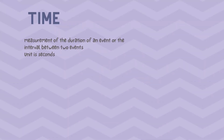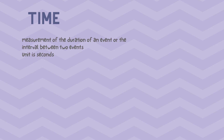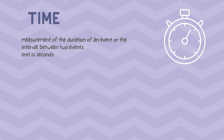Time: Time is the measurement of the duration of an event or the interval between two events. The standard SI unit for measuring time is a second. An instrument used to measure time is a clock or a stopwatch.